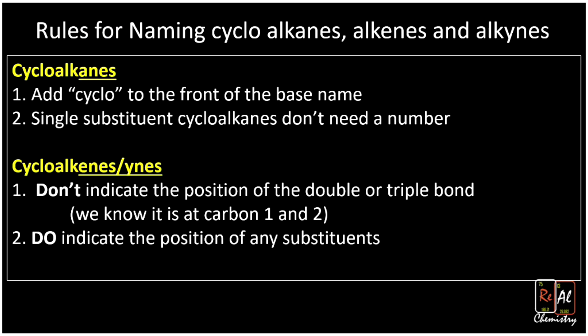Here's a summary of the rules we've learned. For cycloalkanes, we add 'cyclo' at the front of their base name. Single-substituent cycloalkanes don't need a number. For cycloalkenes and cycloalkynes, we still add 'cyclo', but we don't indicate the position of a single double or triple bond — we know it's at carbons one and two. We do indicate the position of any substituents. Thanks for watching this episode of Real Chemistry.